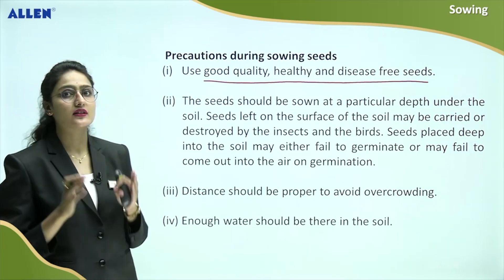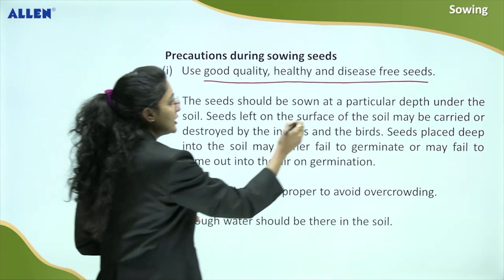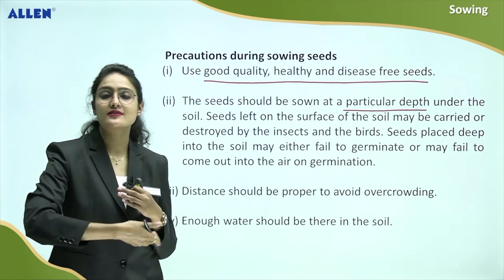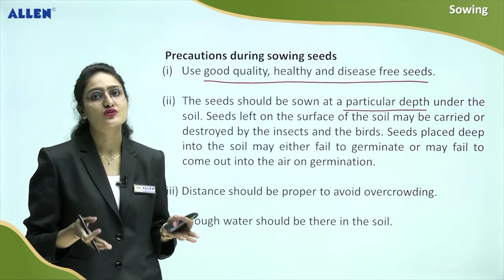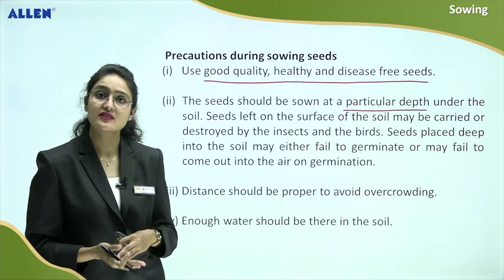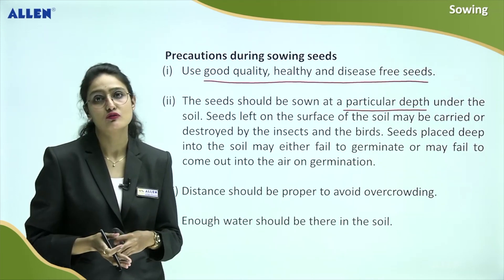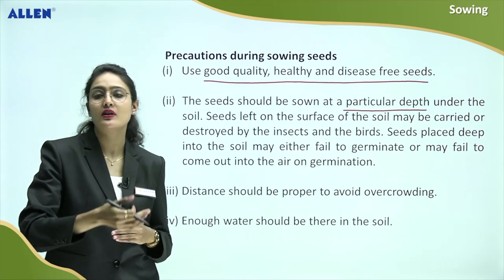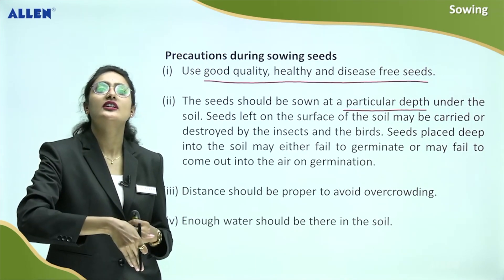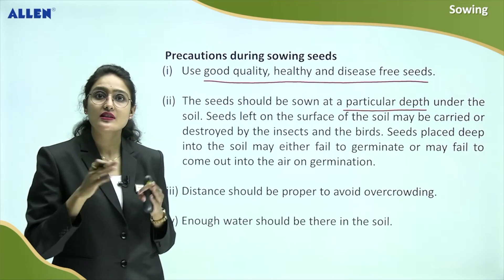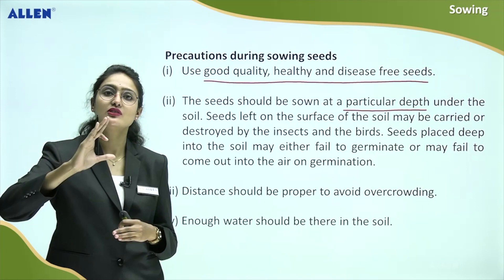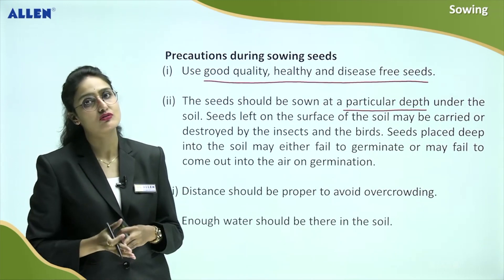The next precaution: seeds should be sown at a particular depth. You need to sow at a particular depth — we cannot simply scatter seeds on the surface of the soil, because then they can be damaged by insects or taken away by birds. At the same time, if you sow them at too great a depth, then the seed will fail to germinate. So the depth must be just right for proper germination to occur.